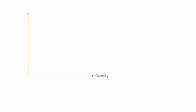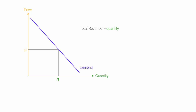Let me prove that for you now and show you how this all works. I put quantity on the x-axis and price on the y-axis and draw a demand curve. Price is P and Q is quantity.